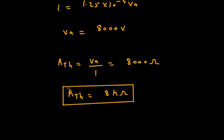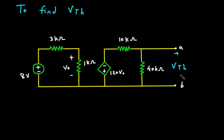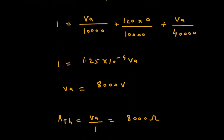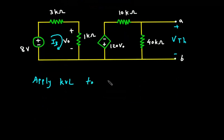Next, we have to find the value of VTH. To find VTH, this will be VTH with positive and negative polarity marked. Let's say this is loop number 1 with current I1. We already have I1, so we will consider it as I3. Let's say this is current I3. We will apply KVL to mesh 3.